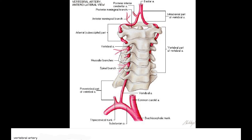The third part is the suboccipital part — meaning before entering the skull. The suboccipital part extends from the foramen transversarium of C1 to the foramen magnum of the skull, and this part lies in the suboccipital triangle.